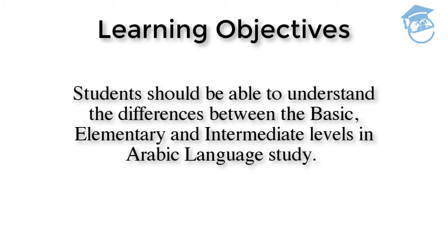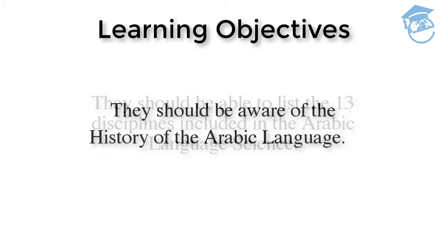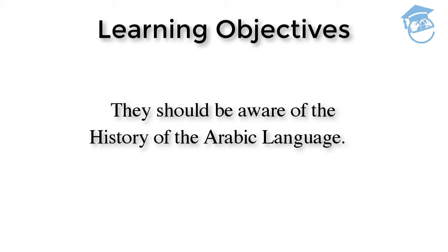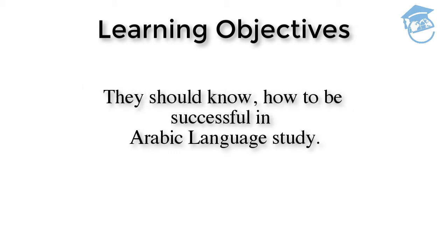Learning objectives. By the conclusion of this video, students should be able to understand the differences between the basic, elementary, and intermediate levels in Arabic language study. They should be able to list the 13 disciplines included in the Arabic language science. They should be aware of the history of the Arabic language from pre-Islamic times through the codification of the language in the 9th century. They should understand the role of the instructor in guiding the student, and they should know how to be successful in Arabic language study.